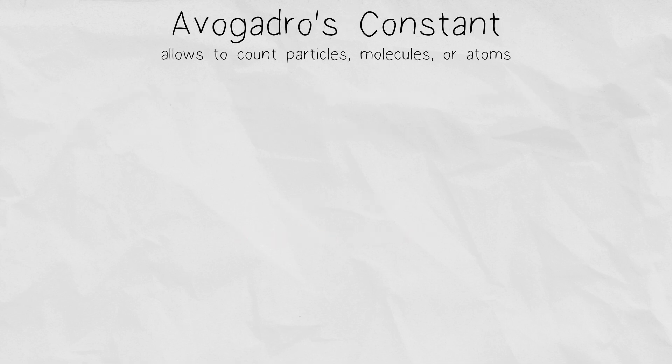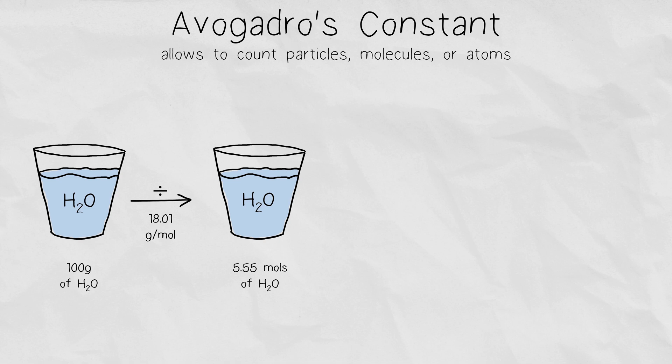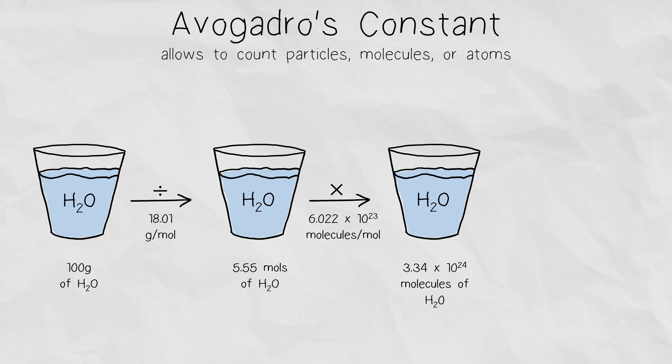Avogadro's constant allows you to count how many particles or molecules or atoms you have. For example, if you had 100 grams of pure liquid water, you could convert that to its molar amount by using the molar mass. Then you can convert that amount to how many water molecules you have using Avogadro's constant. Since we know that the chemical formula of water is H2O, one molecule of water has two hydrogen atoms and one oxygen atom, meaning that we can actually figure out how many hydrogen and oxygen atoms are in our sample.